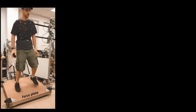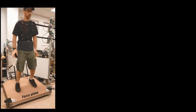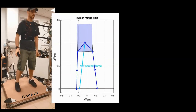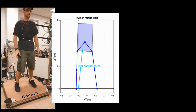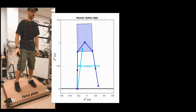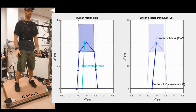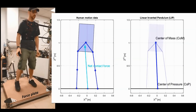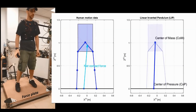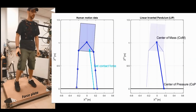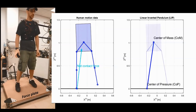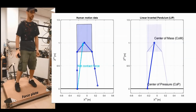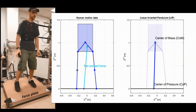To achieve this, we capture human locomotion data, including torso and feet spatial position, as well as the magnitude and location of the net ground contact force. We condensed this information using a simple model for leg locomotion, the linear inverted pendulum, which is represented by the line that connects the center of mass and the center of pressure.